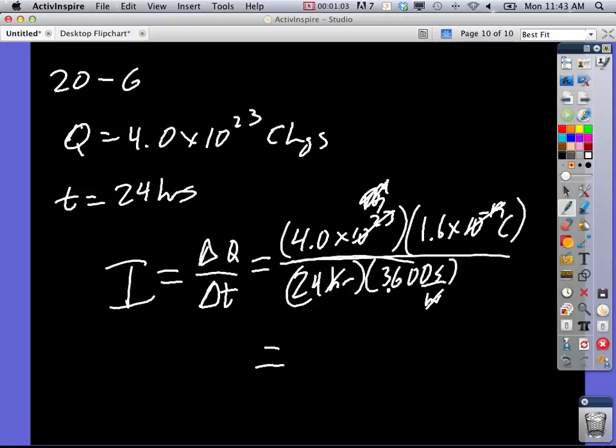So you get 4 times that, 6.4, divided by 72 or 80, I don't know. What is it? 86,400? That's the bottom.